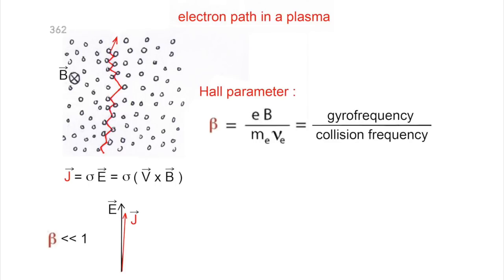The electric current density vector J is almost oriented in the same direction as the electric field E equals V cross B. The critical parameter is the so-called Hall parameter beta, which is the ratio of the gyro-frequency divided by the collision frequency. If it is small, it means that between two collisions, the electron has no time to turn.